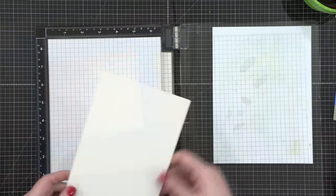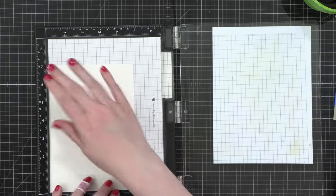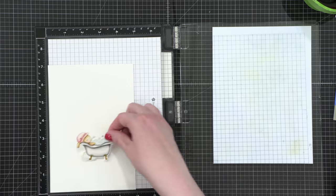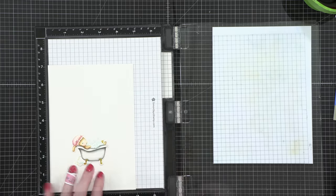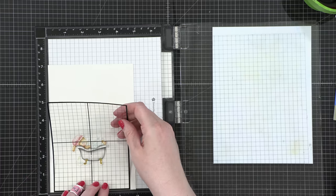So I hit that with my heat tool to dry it and then I set it aside and I'm going to work on the background for the bunny in the bathtub. So I'm placing it on some 5x7 watercolor paper just to get some spacing.